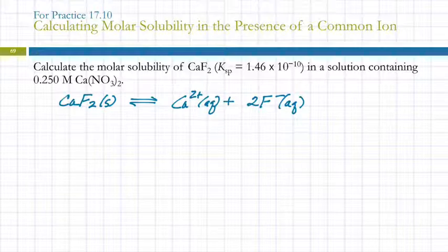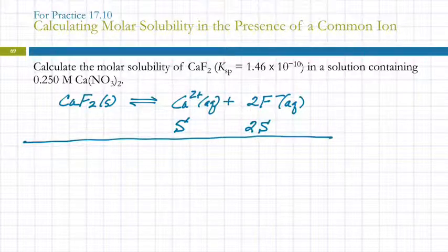If we look at this without the common ion, molar solubility is how many moles of this compound dissolve per liter. So we get one calcium for every unit of this, one mole of calcium for every mole of this. So we could say that the concentration of calcium is equal to the molar solubility. And then when we get one calcium, we get two fluorides, and so this would change by 2s. But what we've got here is, so that's like in pure water. What we've got here is that the calcium concentration is actually 0.250.